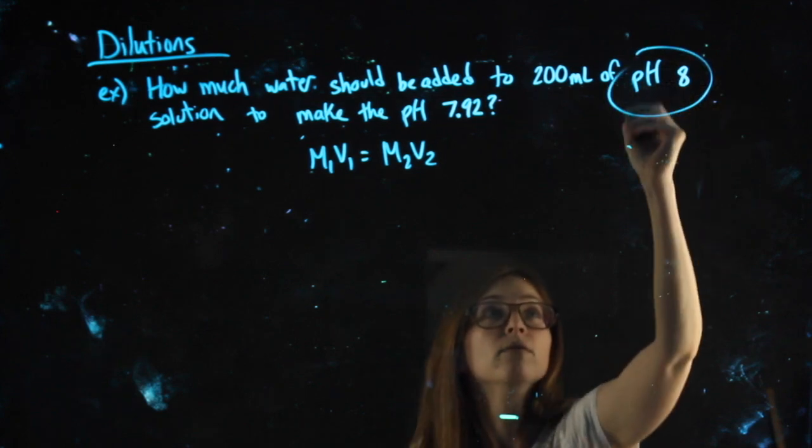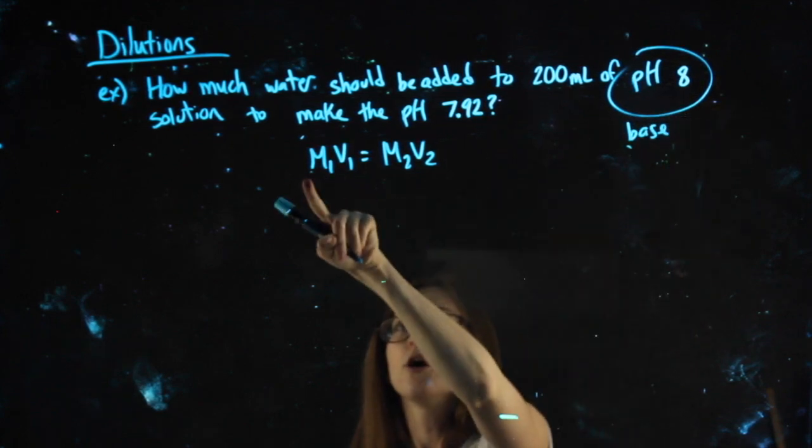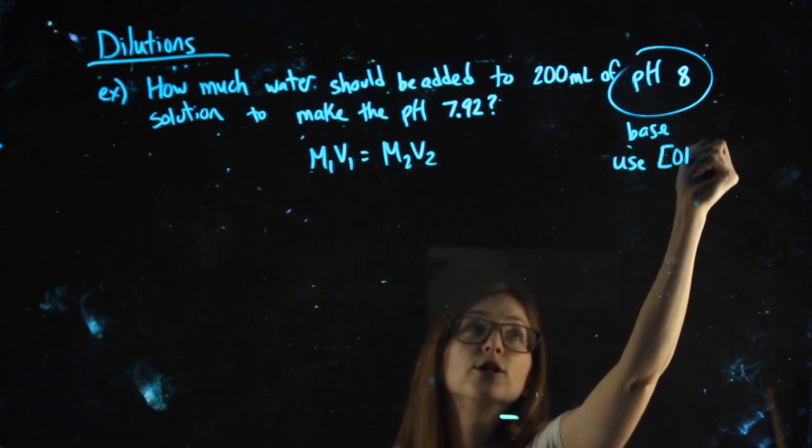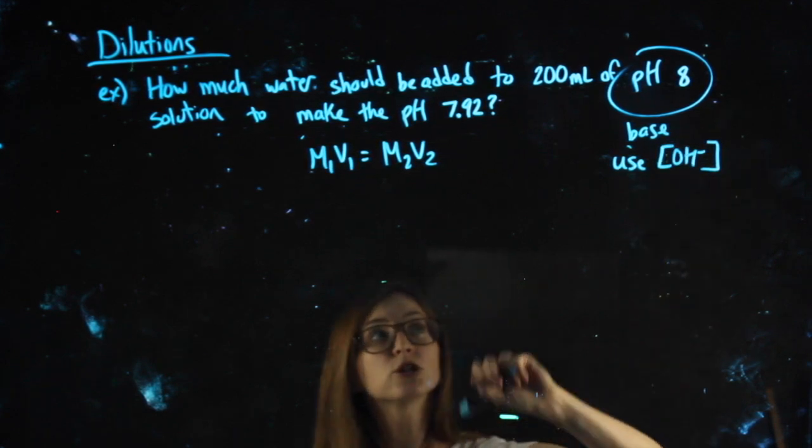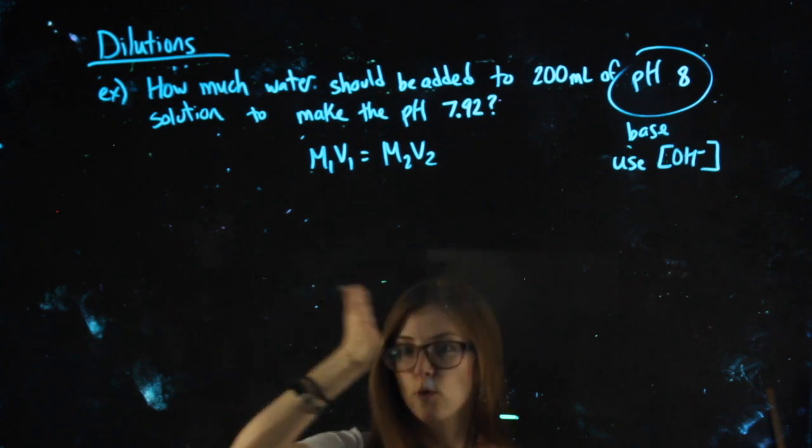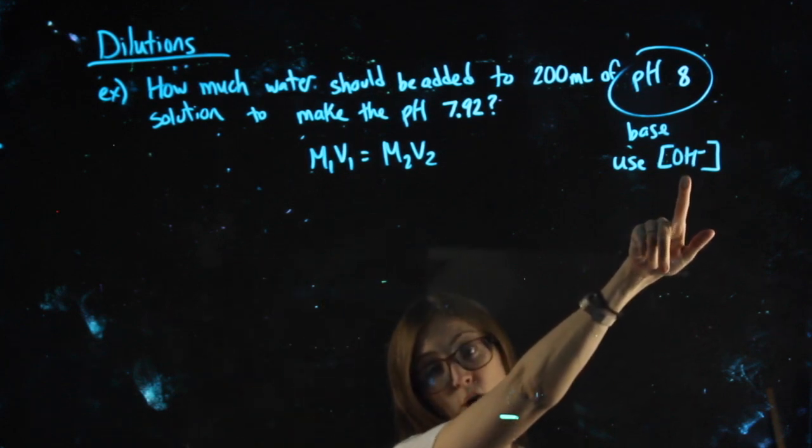Since this is a base though, I know that means my molarities must be OH-. So my first job is to take both of those pHs and get them however many equations I need to get them to the molarity of OH-.